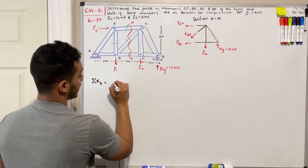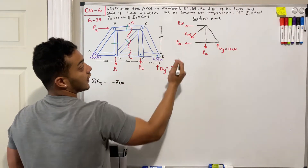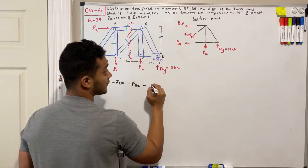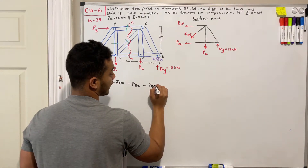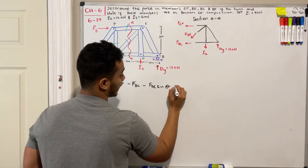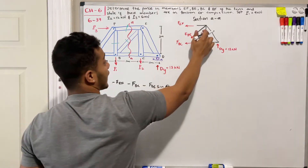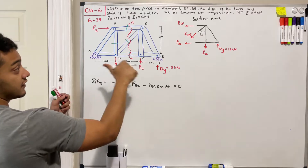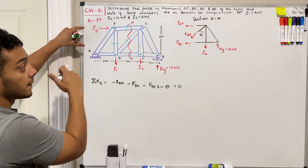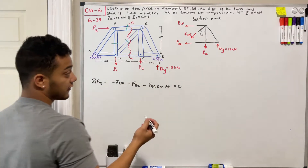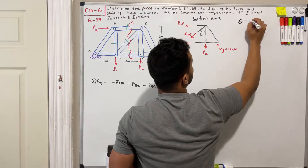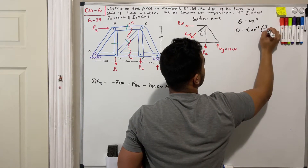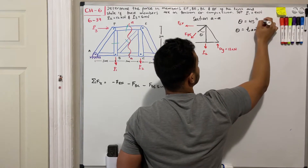For the sum of forces in the X direction, I have negative EF, negative BC, and the X component of F_BE — which is negative F_BE times cosine of theta — all equal to zero. The angle theta: member BE goes 3 meters to the left and 3 meters down, giving theta equal to 45 degrees. We can verify with inverse tangent of 3 over 3 equals 45 degrees.